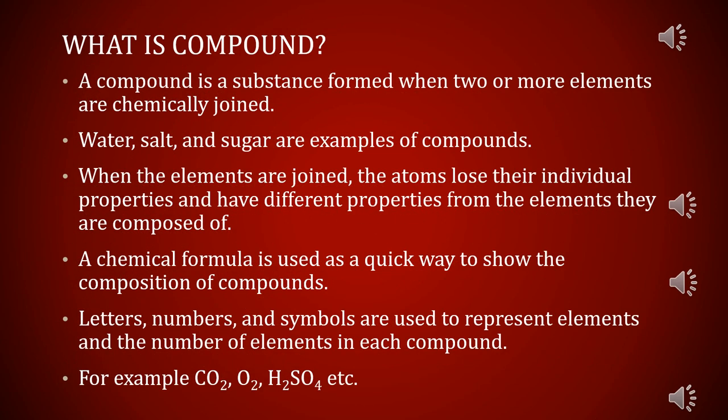What is a compound? A compound is a substance formed when two or more elements are chemically joined. For example, water has the chemical composition H₂O — one atom of oxygen is joined with two atoms of hydrogen. Similarly, carbon dioxide CO₂: one atom of carbon joins with two atoms of oxygen to give the formula CO₂.